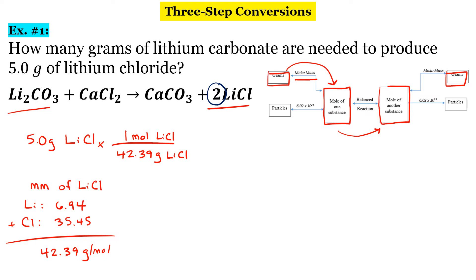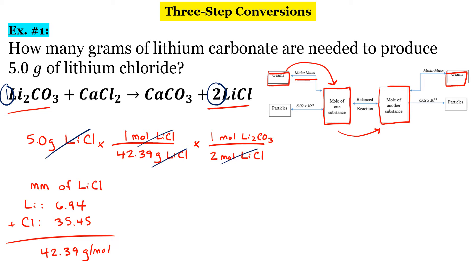If you notice, there isn't a number in front — there's an imaginary one anytime there is not a number. So we have for every two moles of lithium chloride, we have one mole of lithium carbonate. Grams of lithium chloride will cancel, and now moles of lithium chloride will cancel. Now we're going from moles of lithium carbonate to grams of lithium carbonate, so we're going to use that molar mass again.